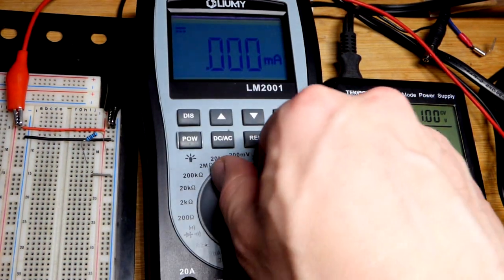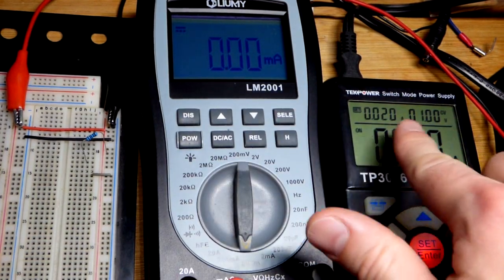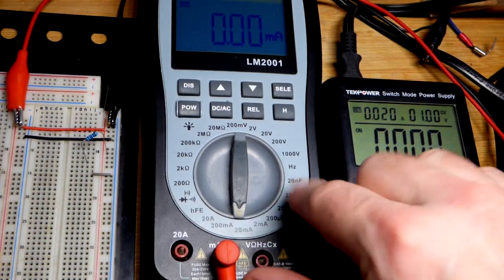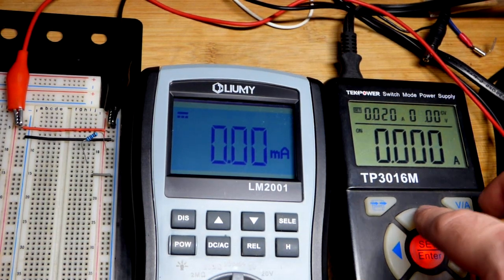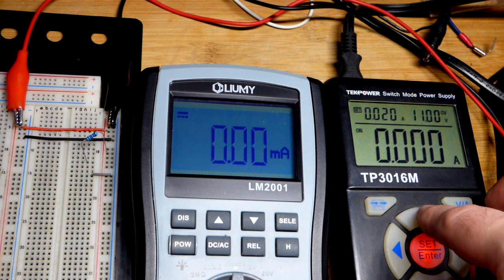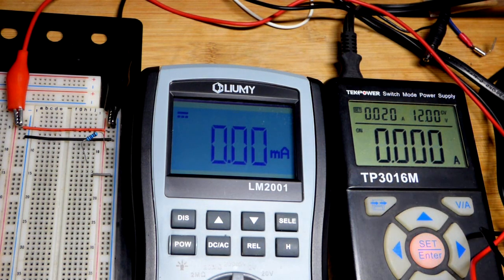Now we're going to set it back up to 20 milliamps, which is the maximum current the power source is set to output, so we're really safe here. And we're going to raise the voltage up to 12 volts, and we should expect 12 milliamps of current now.